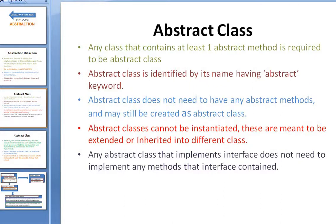An abstract class is a class that contains at least one abstract method. It is not required to have an abstract method inside the abstract class — you can still have all concrete methods inside — but that's not really the point of using abstract classes. If you have at least one abstract method, the system will tell you to make that class abstract. The compiler will force you to make that class an abstract class.